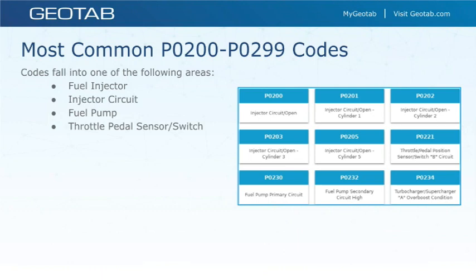Codes between P0200 and P0299 are fuel and air metering injector circuit codes — codes for issues involving the fuel injector. These are usually electronic-based, not the mechanical function of the part but the electronic component, which is why they're always associated with a circuit or range.